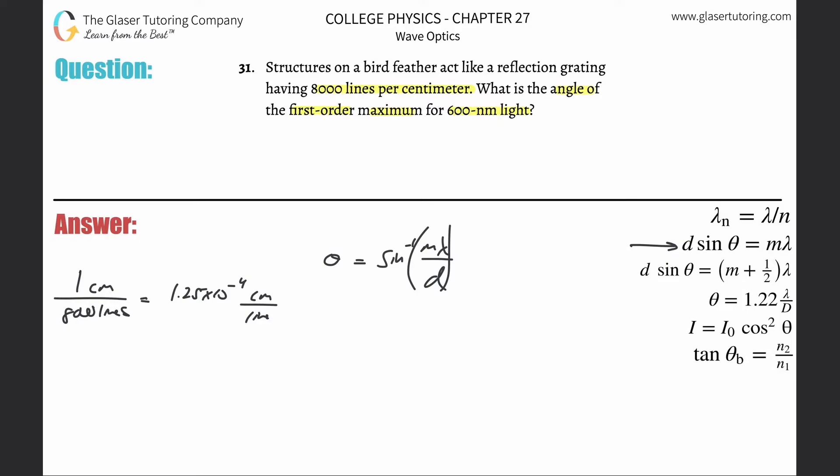Now, to keep everything consistent, because this is centimeters, here's nanometers, that's a problem. Just convert everything to meters. So, centimeter on the bottom, meter on the top, there is going to be, for every one meter, there's 100 centimeters.